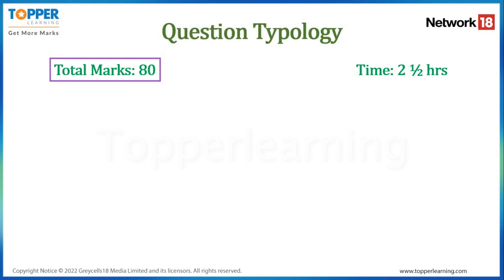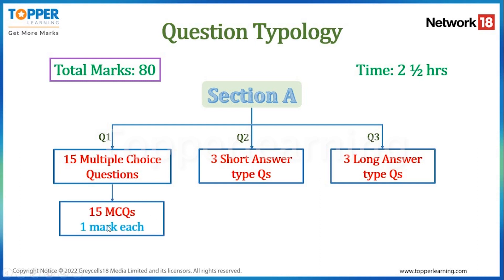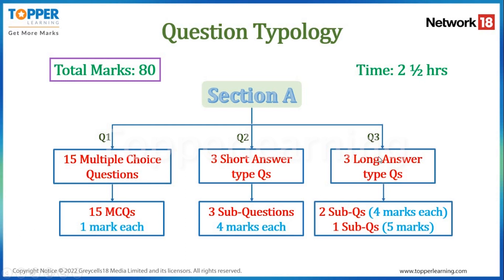Now let's talk about the types of questions in your board exam. Section A: Question 1 will have 15 multiple choice questions at one mark each, totaling 15 marks. Question 2 will have three sub-questions, each of four marks. Question 3 will also have three sub-questions, where two sub-questions are of four marks each and one sub-question is of five marks.